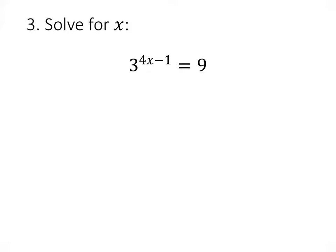Our first technique for solving exponential equations is to look for when we can make the two sides of the equation have the same base. In this case, we have 3 to the 4x minus 1, and 9 is 3 squared, and that means that these two exponents, 4x minus 1 and 2, have to be equal to each other. So 4x minus 1 must equal 2. So we add 1 to both sides, divide both sides by 4, and we get that x equals 3 fourths.